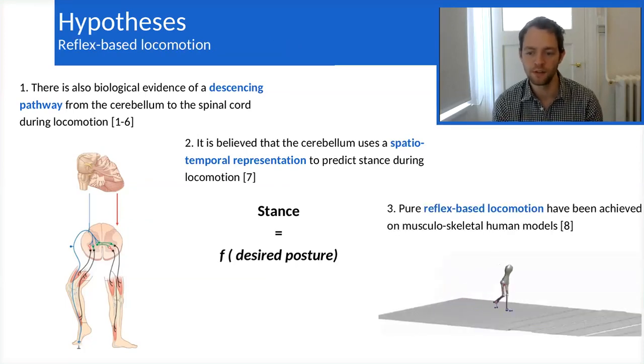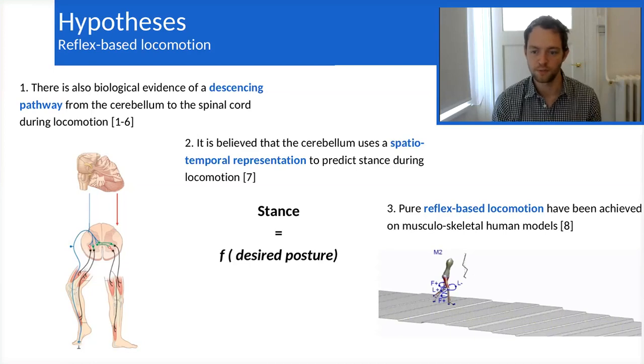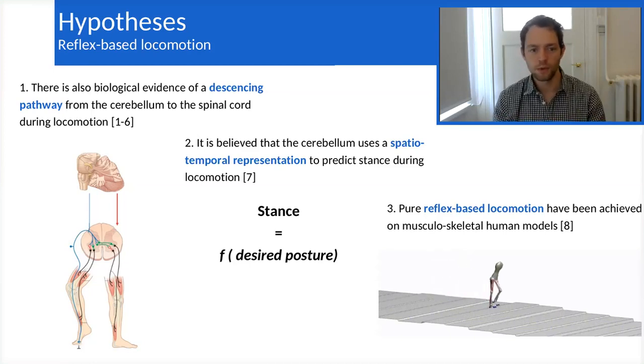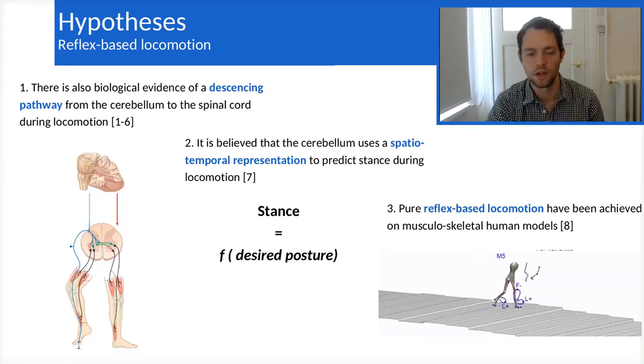And finally, there have been some work in simulation showing that locomotion can be completely achieved in a closed-loop way using ground reaction forces from the feet to do reflex-based locomotion. So we wanted to combine those different pieces of evidence from the cerebellum and from closed-loop locomotion in a reflex-based mode together in a robotics architecture.